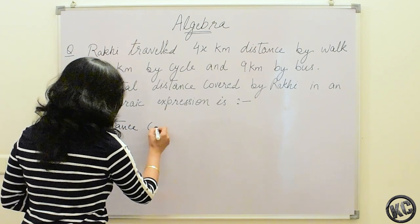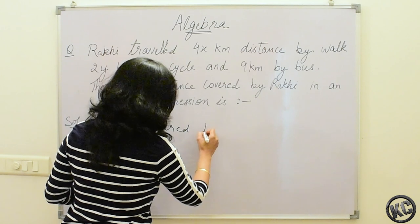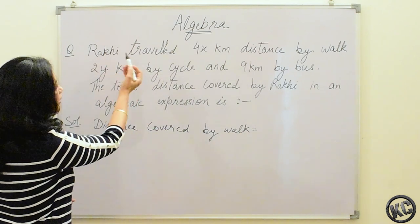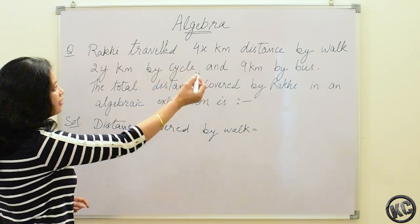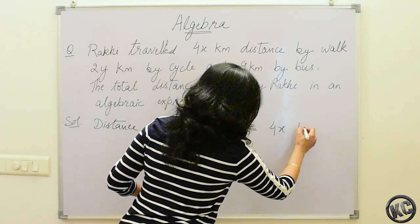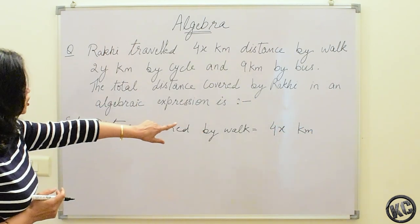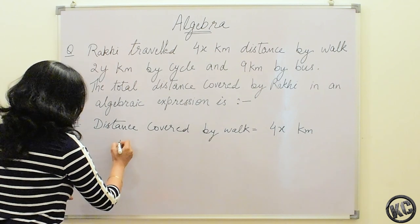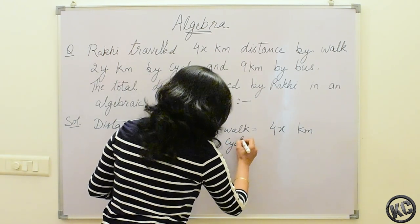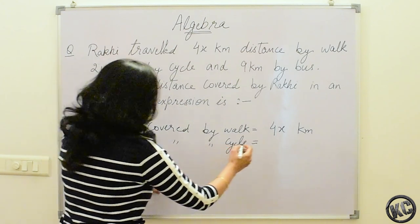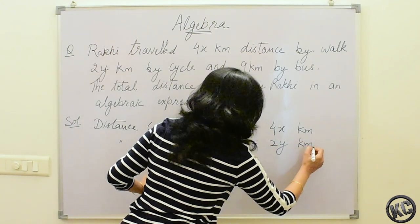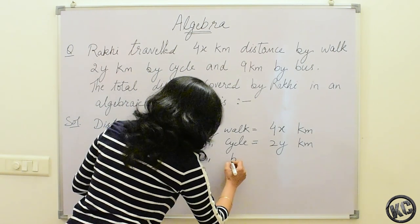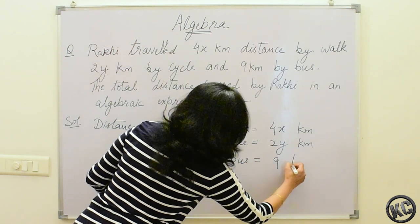Distance covered by walk: Raki travelled 4x km distance by walk, so here we will write 4x km. Distance covered by cycle is 2x km. And distance covered by bus is 9 km.